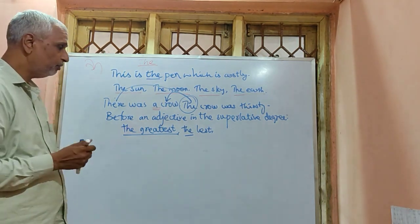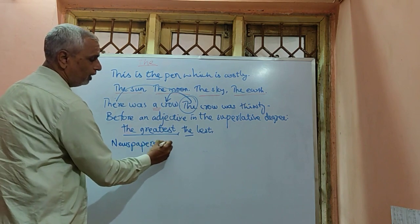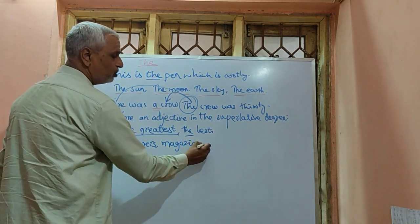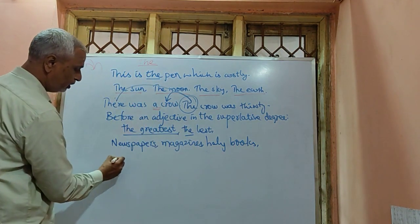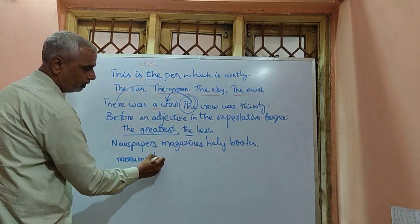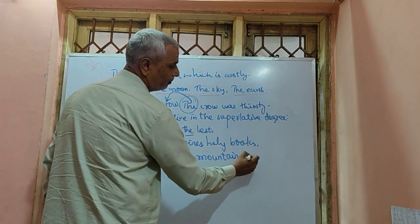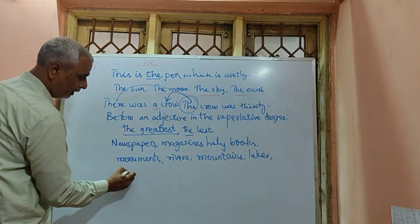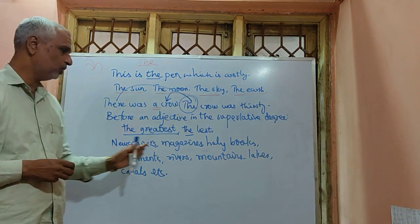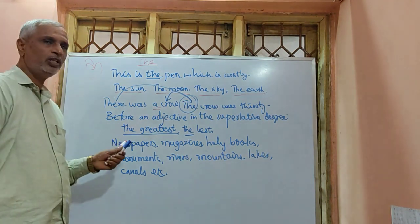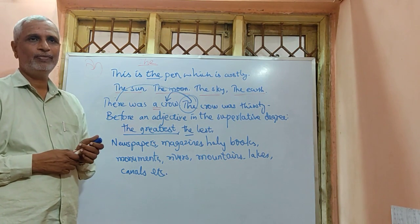We can use article 'the' before the names of newspapers, magazines, holy books, monuments, rivers, mountains, lakes, and canals — also oceans and deserts. For example: the Arabian Sea, the Bay of Bengal, the Sahara Desert.